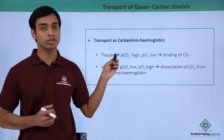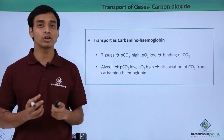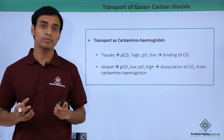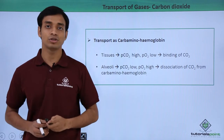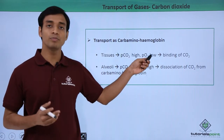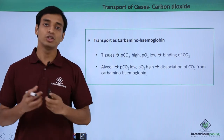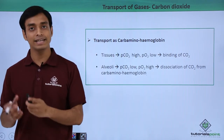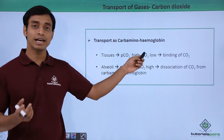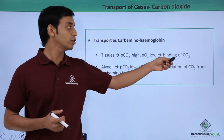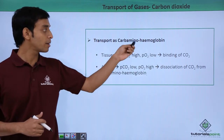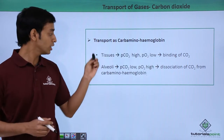At the tissue level, the partial pressure of carbon dioxide is very high because of metabolic activities that release carbon dioxide. Meanwhile, the partial pressure of oxygen is low because oxygen has been utilized and carbon dioxide has been formed. This condition allows hemoglobin to bind with carbon dioxide, resulting in the formation of carbaminohemoglobin.